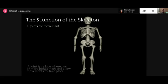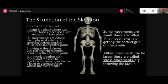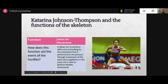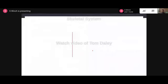The fifth function - joints - and how they aid performance: looking at how the function aids her when performing in the hurdles, it allows her to perform skills requiring movement and suppleness. The flexibility in her joints means she's able to perform flexible movements.